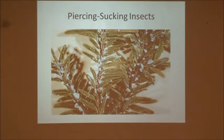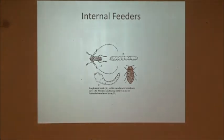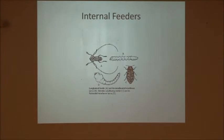Piercing and sucking insects basically attach themselves to leaves, poke their mouth parts in, and suck out nutrients, which causes damage. Internal feeders — this is a picture of a longhorn beetle. Wood-boring insects are an example; something like a leaf miner gets inside the leaf and makes its little home, or an ambrosia beetle gnaws its way into the trunk of your crape myrtles and feeds from the inside.